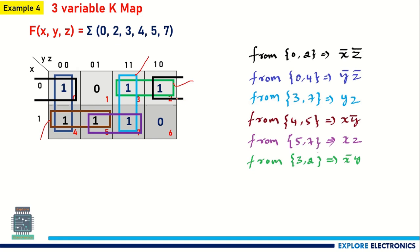So we have six groups finally. These six groups give six expressions. Adding all of them creates a complex expression. These are called prime implicants. We need to find out which is the essential prime implicant and which is not essential.